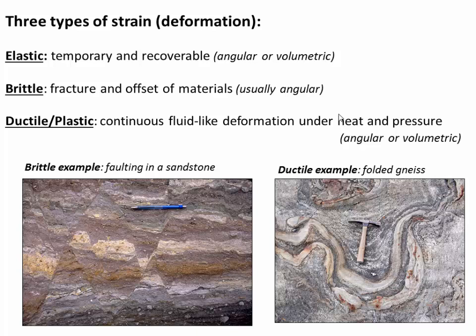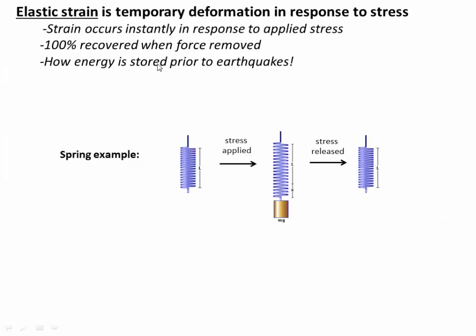The three main types of strain are elastic, brittle, and ductile. Elastic strain is a temporary deformation that occurs in response to stress — when you squeeze or stretch something and it returns to its original size once that stress is released. A good example is a spring: at its resting state, adding a weight extends it and creates positive strain, but when the weight is removed it goes right back to its original size. Elastic strain is very transient, and interestingly this is how energy is stored prior to earthquakes — the crust gets compressed, and then during the earthquake it expands and releases that energy.